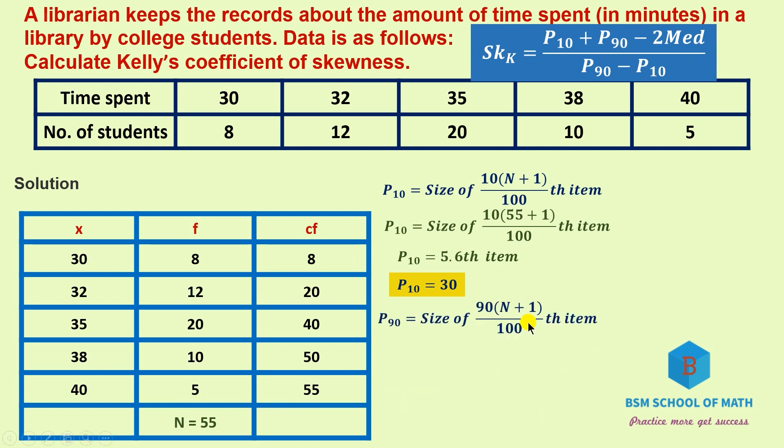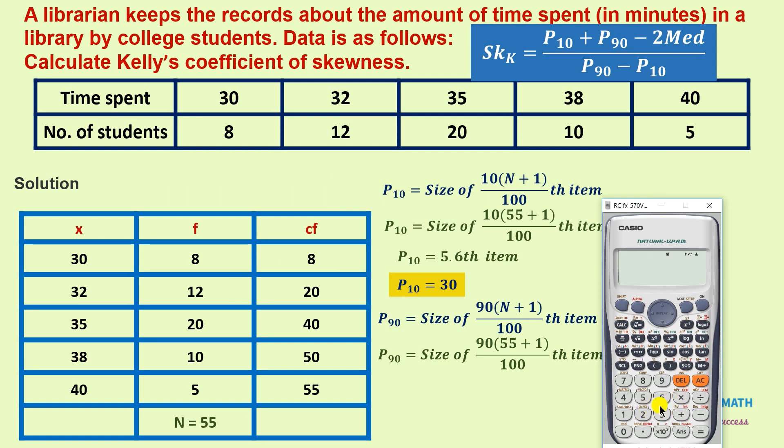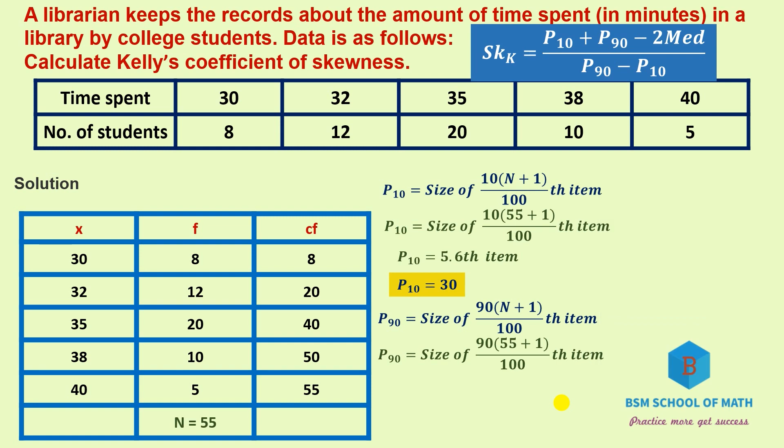P90 equals size of 90(N plus 1)/100th item. Substituting: 90 times 56 equals 5040 divided by 100, which is 50.4. Size of 50.4th item, 50.4 or above is 50, so corresponding value is 38. P90 equals 38. Note that D1 equals P10 and D9 equals P90.